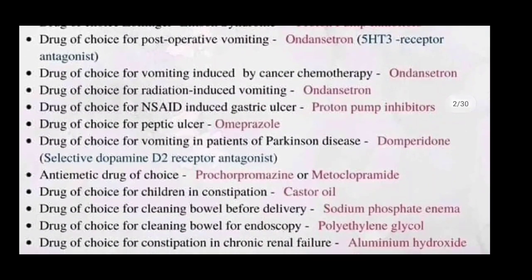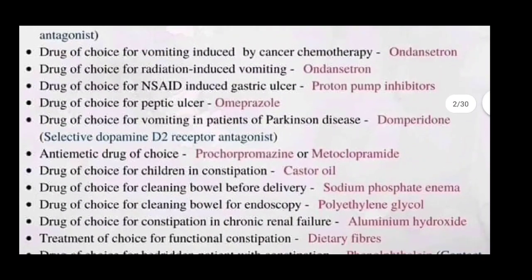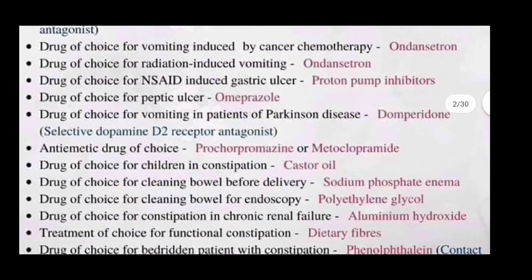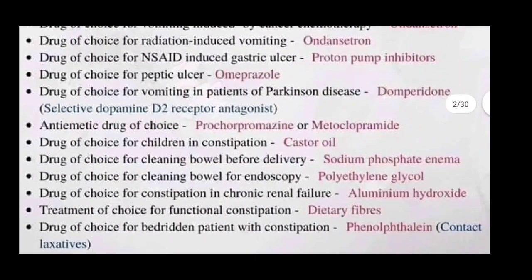Drugs of choice for vomiting induced by cancer chemotherapy is again ondansetron. Drugs of choice for radiation-induced vomiting is again ondansetron. Drugs of choice for anesthesia-induced gastric ulcer is proton pump inhibitor. Drugs of choice for peptic ulcers is omeprazole.